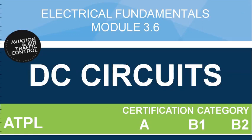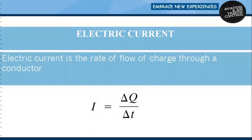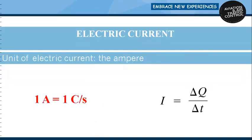Electric current is the rate of flow of charge through a conductor. Mathematically, current is defined as the rate of change of charge, so I equals delta Q divided by delta T. The unit of electric current is the ampere. If one coulomb of charge flows through a conductor in one second, the current flowing through the conductor is known as one ampere.